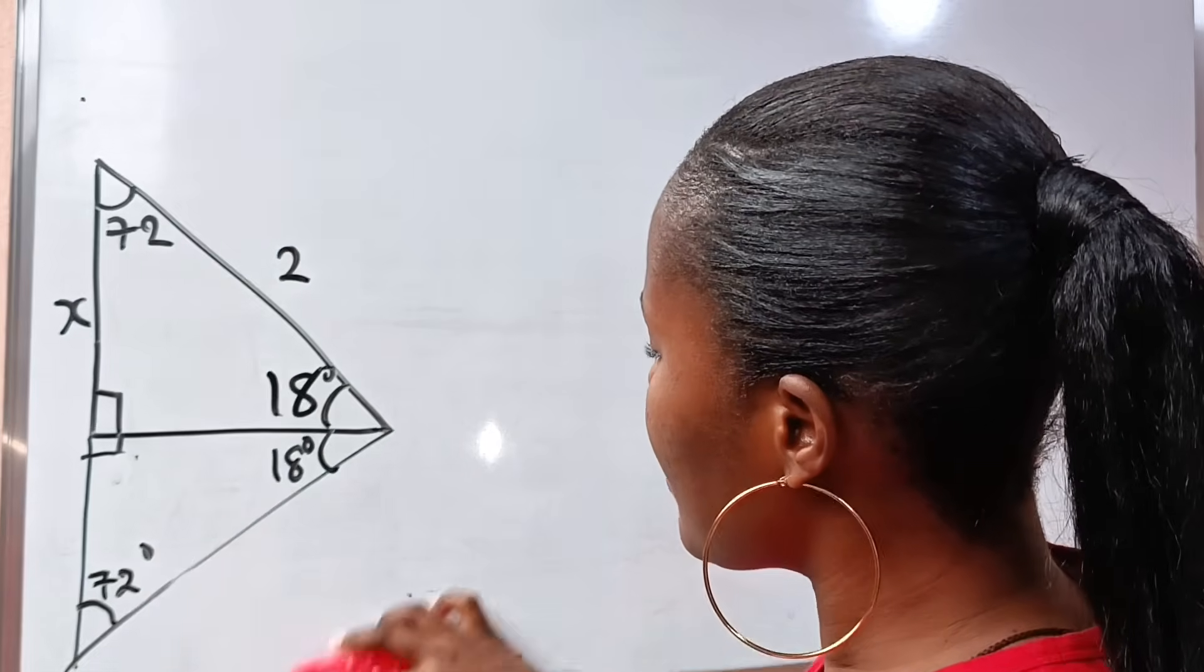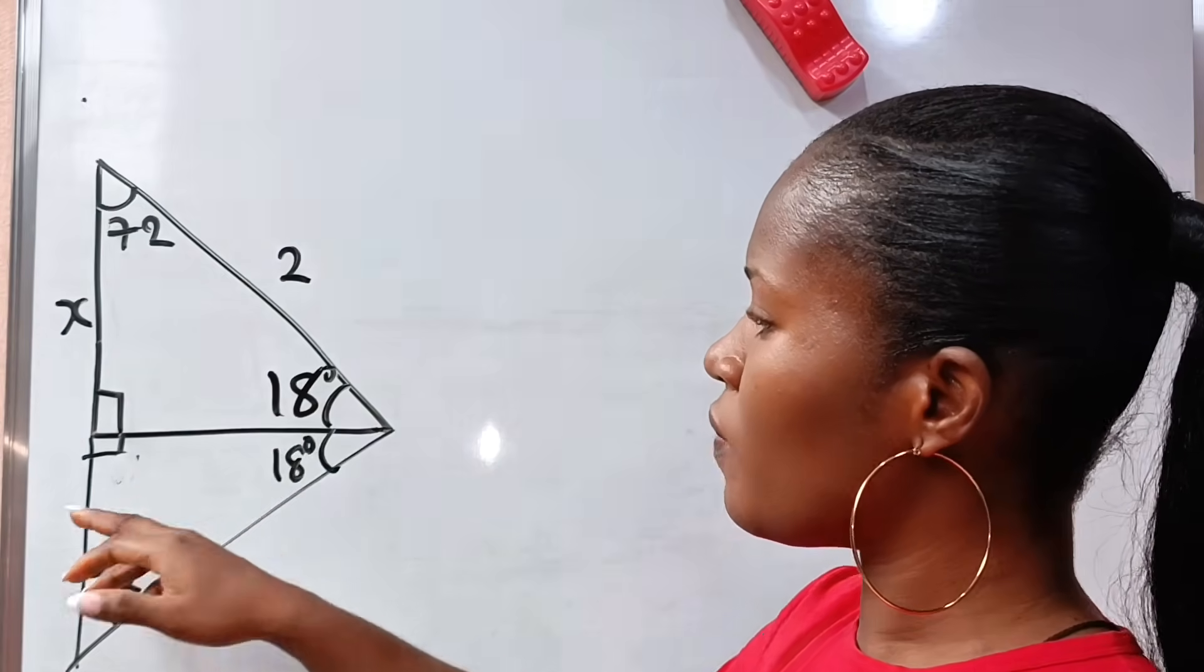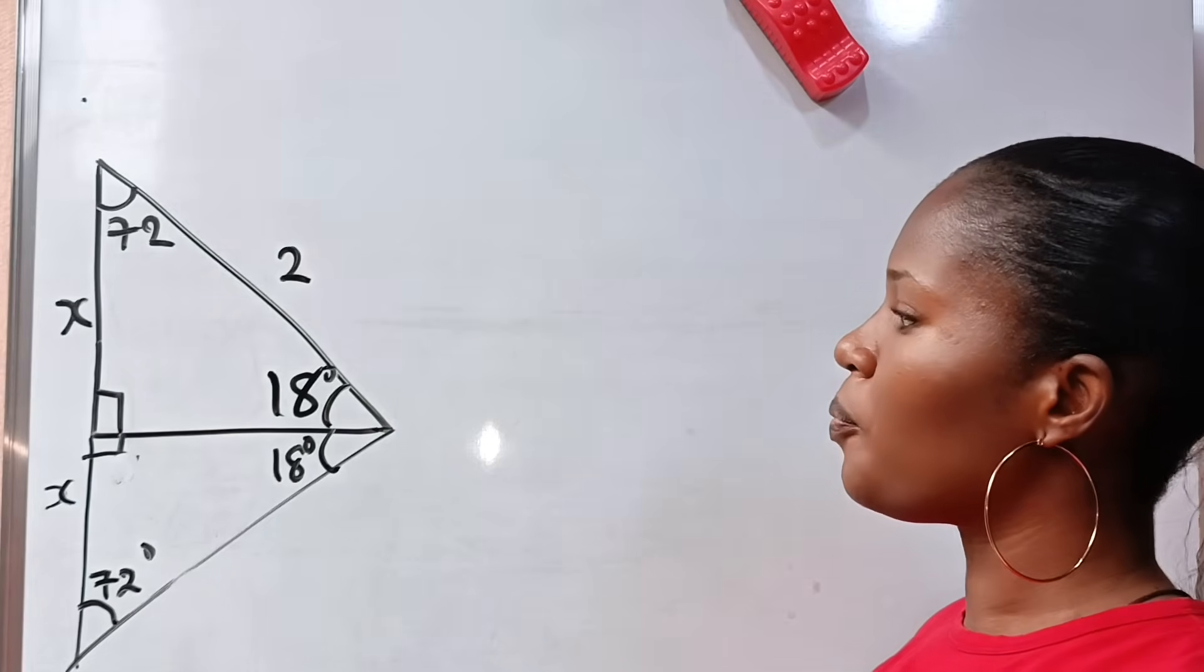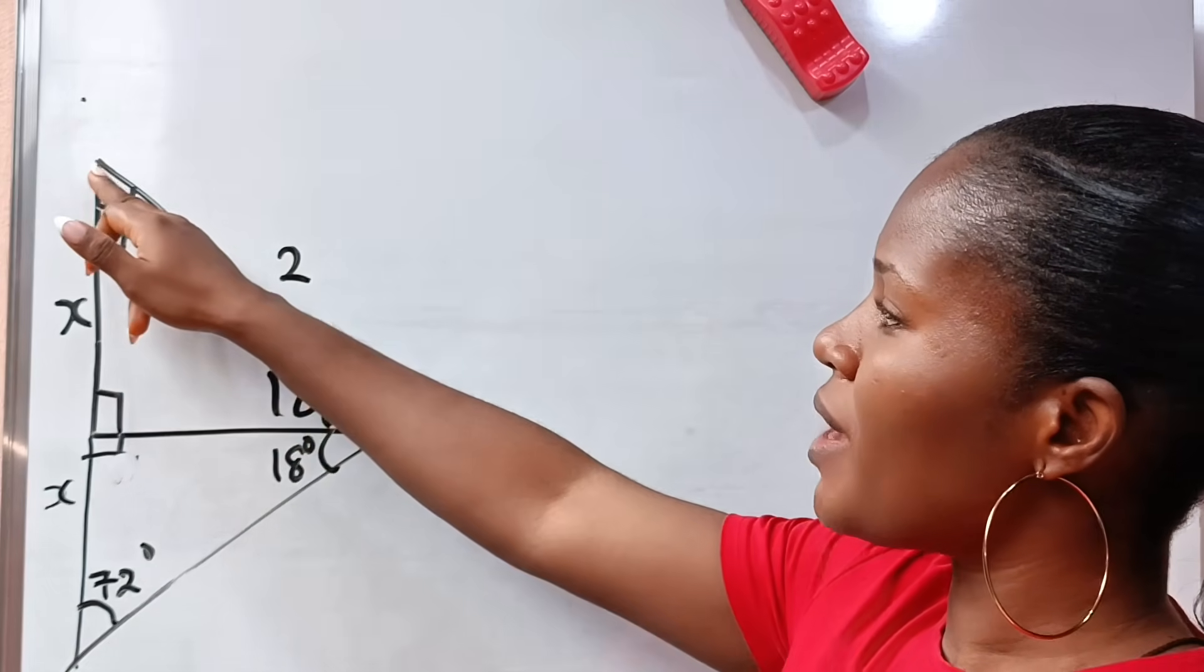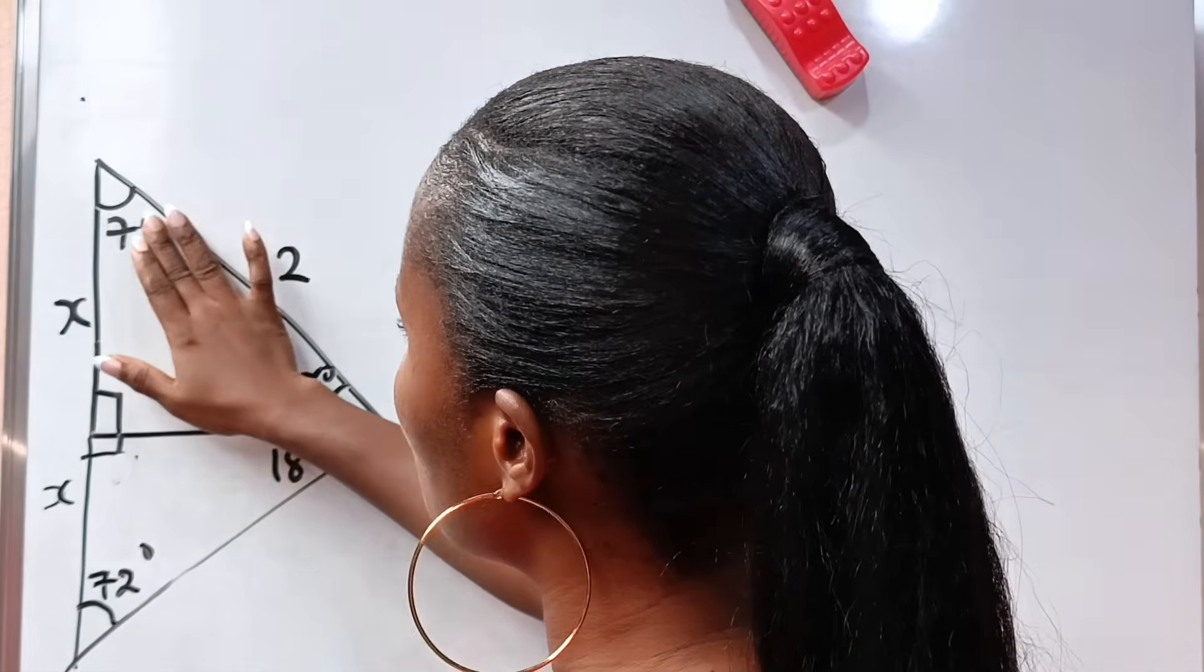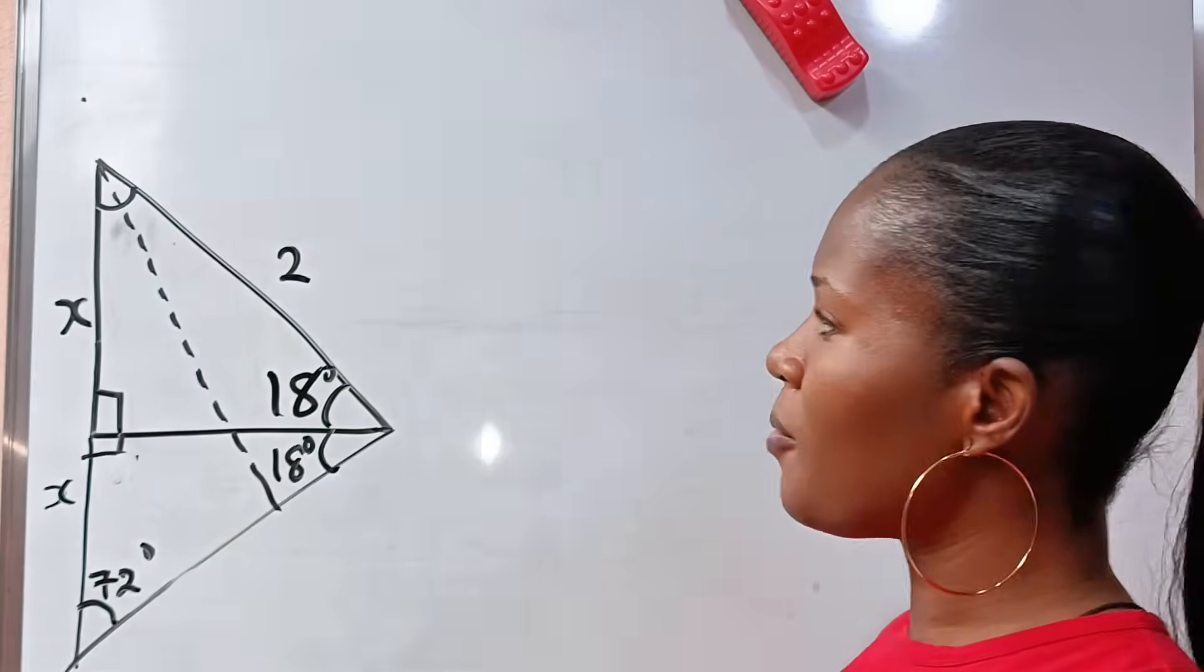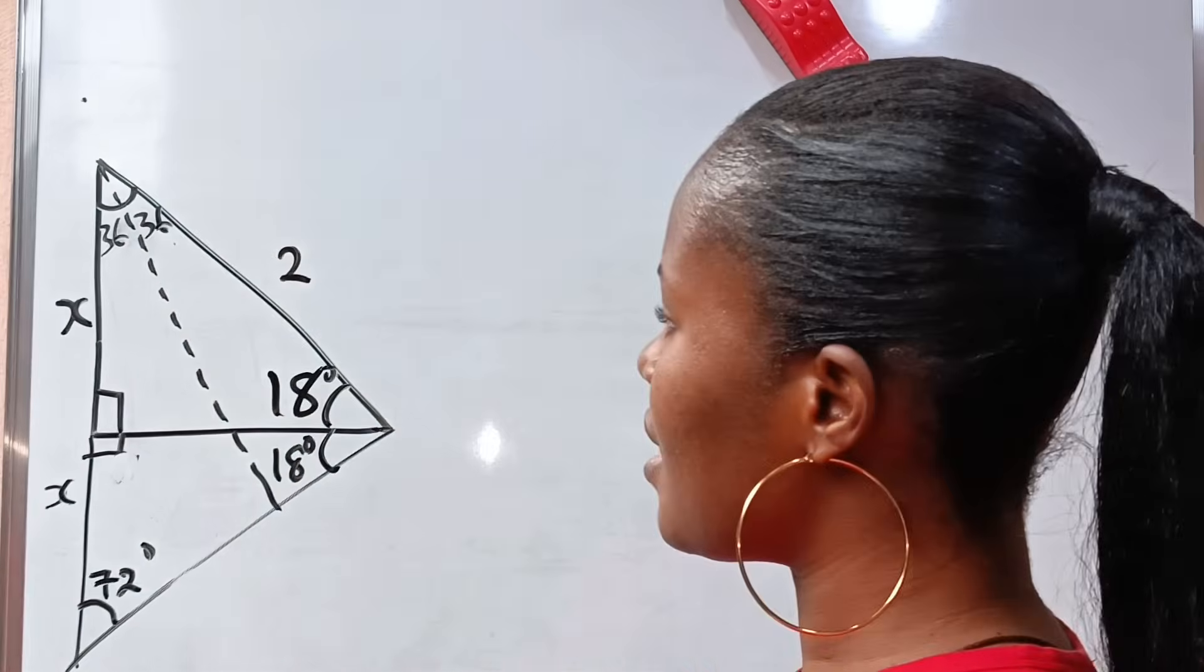And that simply means that the angle we have here as well is 72 degrees. Like I said, we are trying to find X without the use of a calculator. Because this is the duplicate of this, that means this side is also X. Now if you look at this particular drawing now, if we decide to drop a perpendicular bisector of 72, it means that we now have 36 and 36, right?